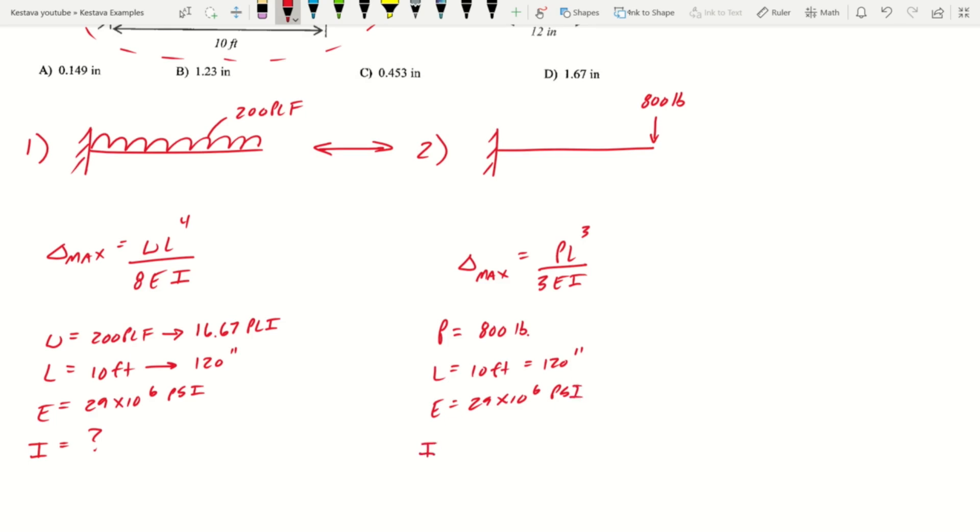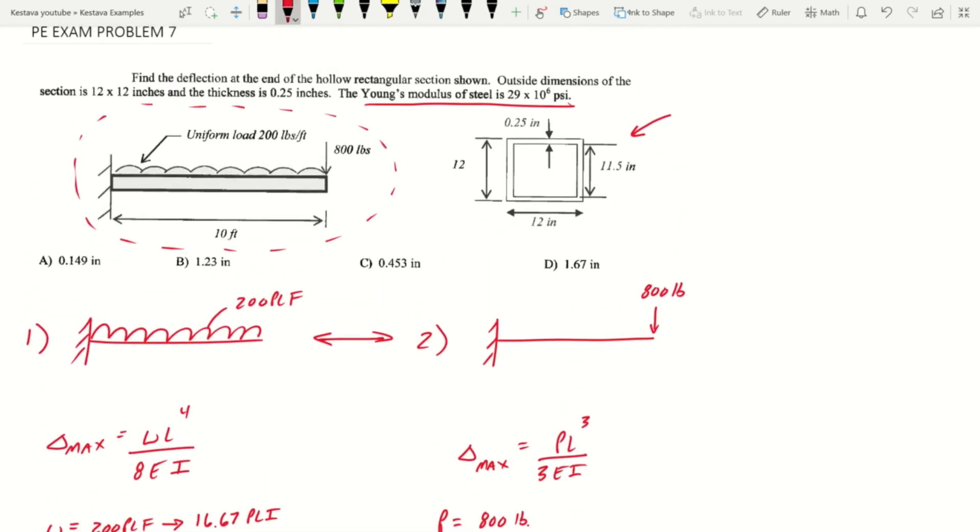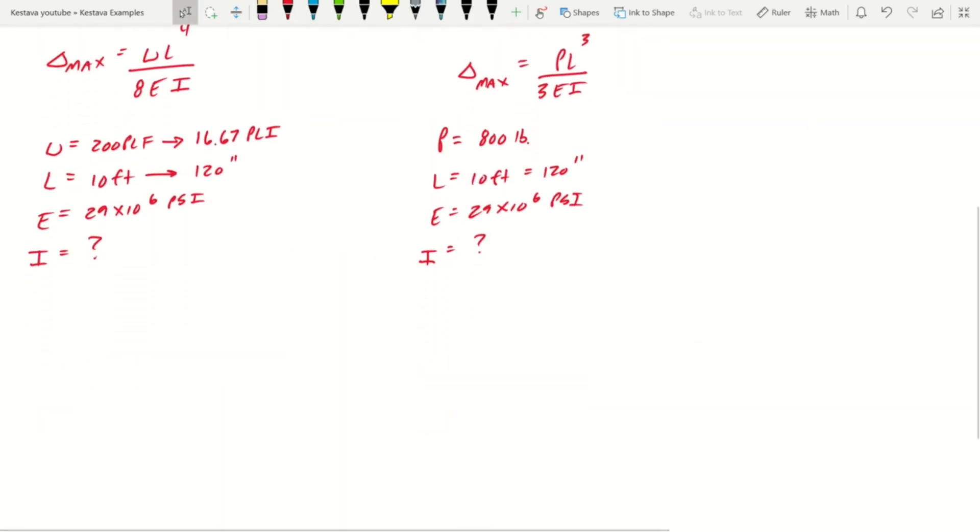Three is just a constant, E is 29 times 10 to the sixth psi. And then we need our moment of inertia which is question mark. The moment of inertia for both is the same because it's the same member, and now we're going to come back to find our I. We're going to use this cross section they gave us.